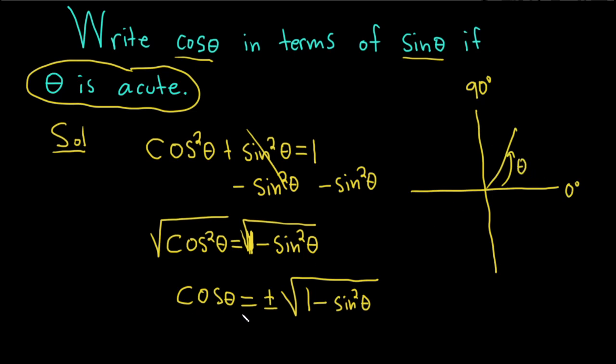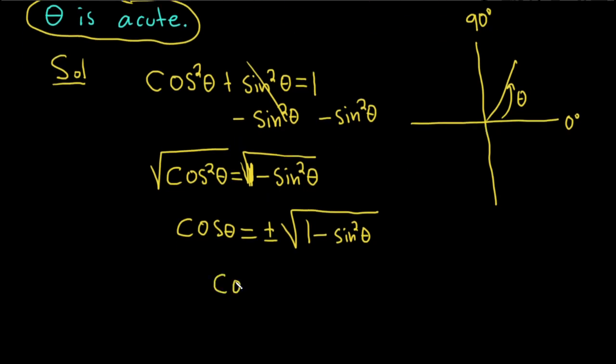So cosine is the x-coordinate on the unit circle. And the x-coordinate here is positive. That means cosine must be positive, so we just use the plus.